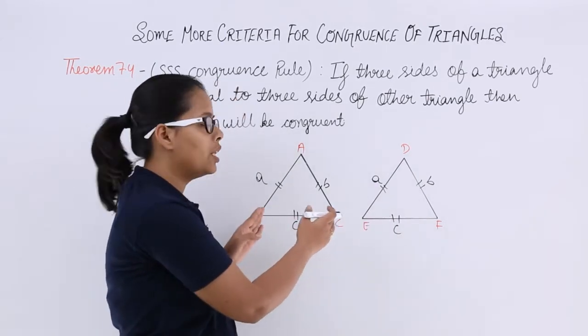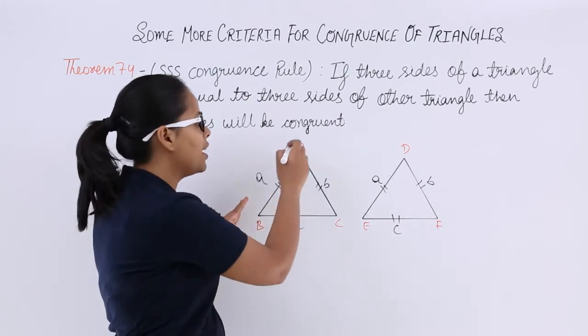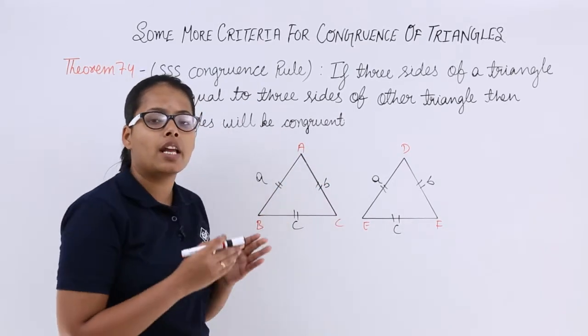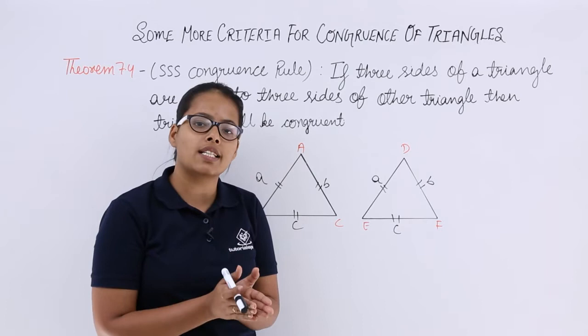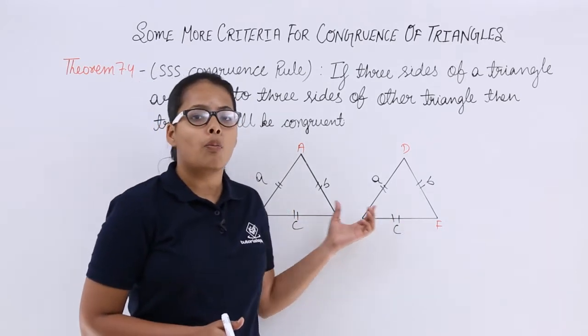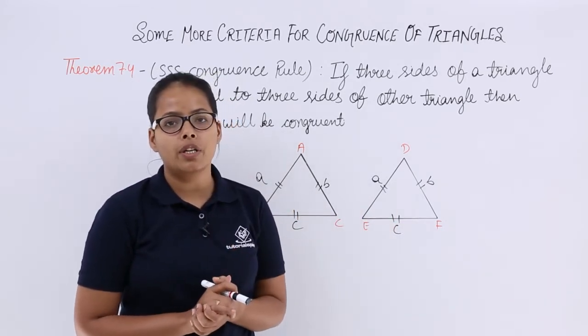So when you put one triangle over the other, you will see that you are getting the same triangles. They are similar in shape as well as size. That's how both the triangles will be congruent to each other.